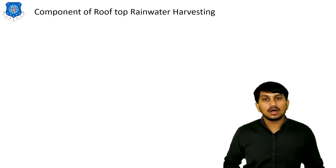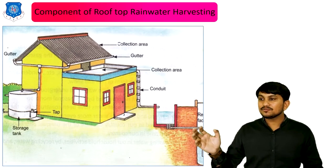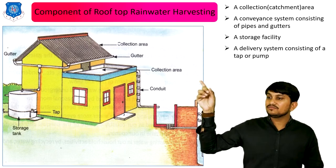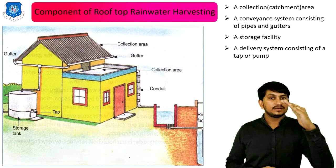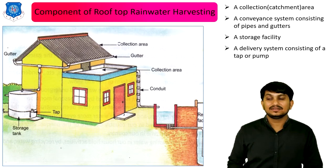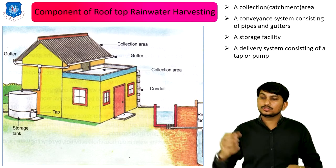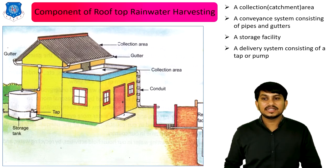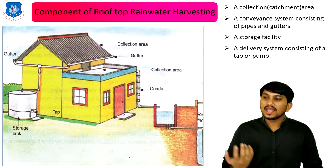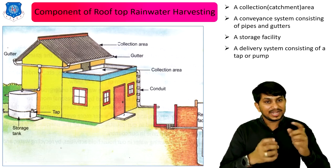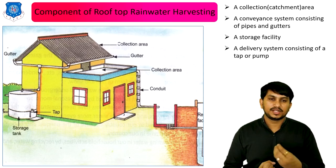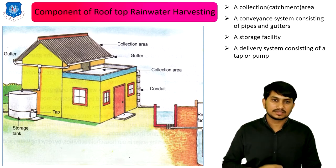The components of rooftop rainwater harvesting can be seen in this figure. First is the collection area — the roof that collects the rainwater. Second is the conveyor system, which consists of various pipelines and gutters that guide the water from the roof to the storage facility. Third is the storage facility, which includes underground water tanks and overhead water tanks. Fourth and last is the delivery system, which consists of water taps or a pumping system used to retrieve water from the water tank. These are the four main components of rooftop rainwater harvesting.